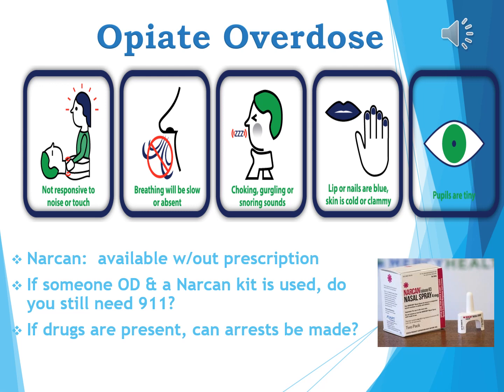The most telling sign specific to the opiate family is tiny pupils. If pupils are tiny in an unresponsive person, that strongly indicates opiates. If a Narcan kit is available, it can be used safely — available without prescription. If someone is overdosing and clearly on an opiate and the Narcan kit is used and they're coming around, you still need to call 9-1-1, because in about half or more of cases, the single Narcan kit does not have enough medication to fully reverse the overdose. Laws also protect you from arrest if drugs are present when you call 9-1-1.